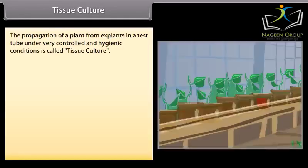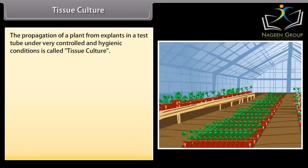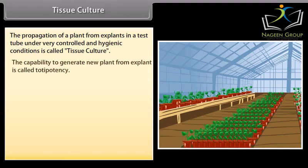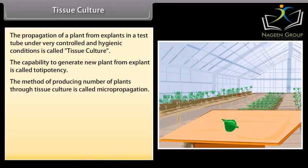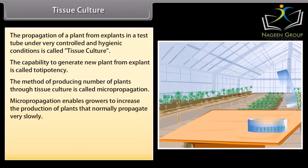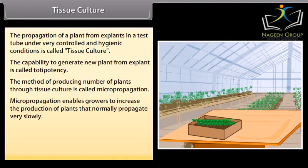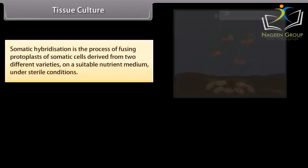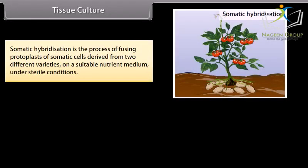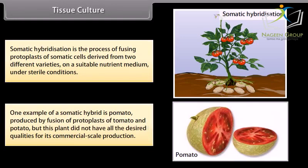Tissue culture is the propagation of a plant from explants in a test tube under very controlled and hygienic conditions. The capability to generate a new plant from an explant is called totipotency. This method of producing plants through tissue culture is called micropropagation. Plants developed through micropropagation are genetically similar to the original plant and are called somaclones. Somatic hybridization is the process of fusing protoplasts from two different varieties; one example is pomato, produced by fusion of protoplasts of tomato and potato.